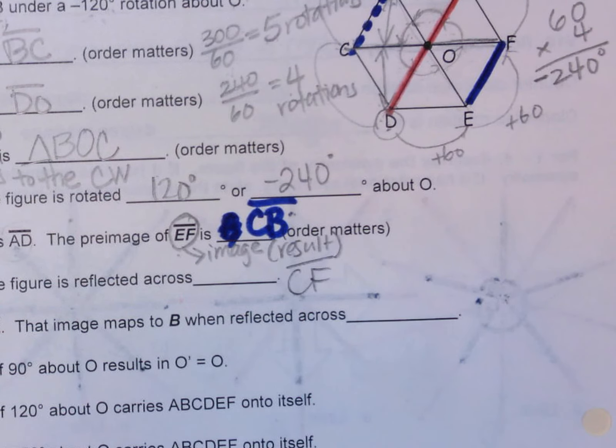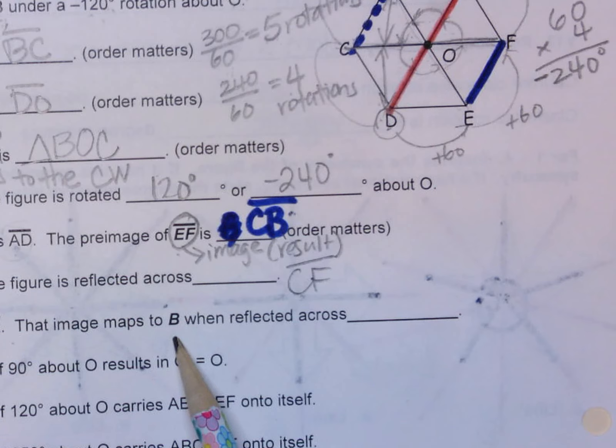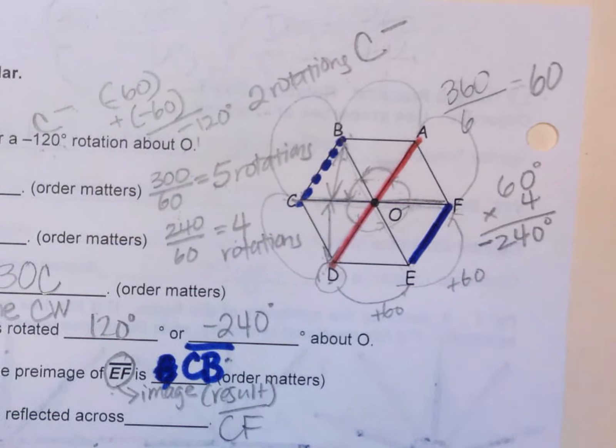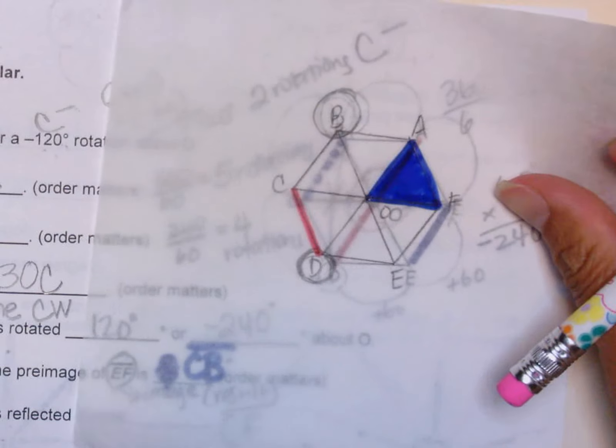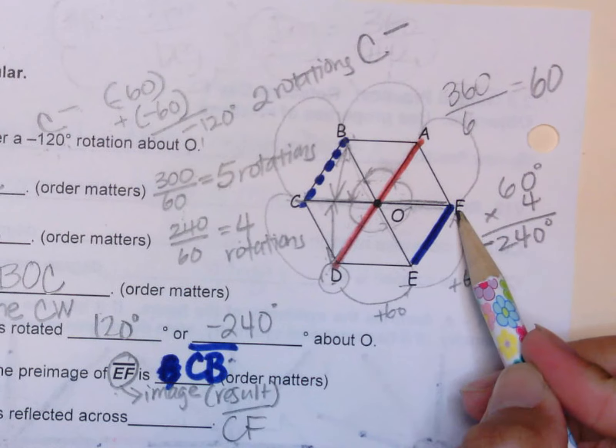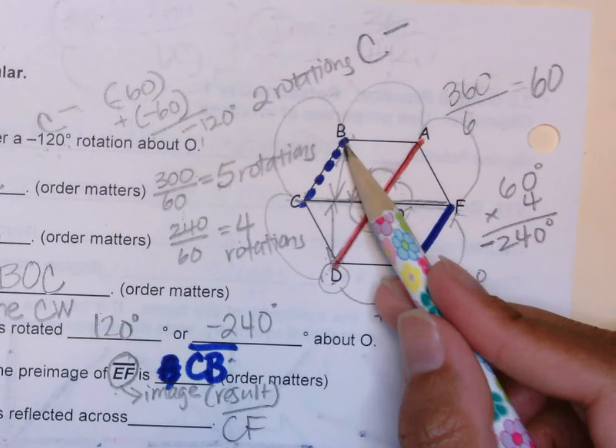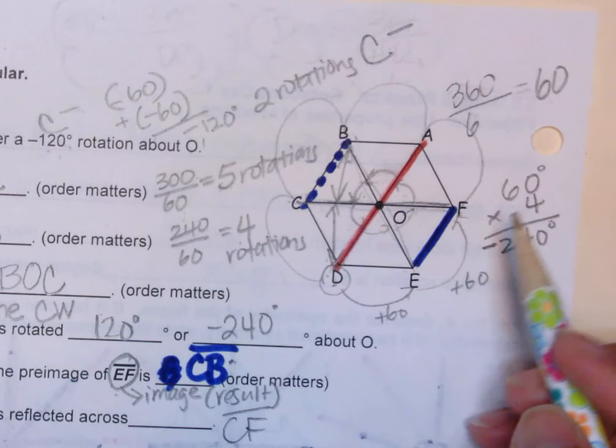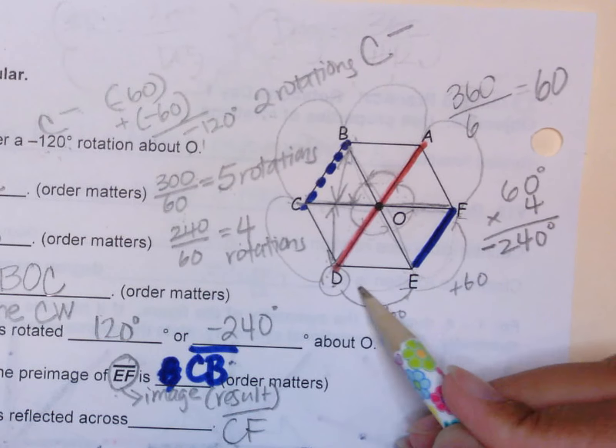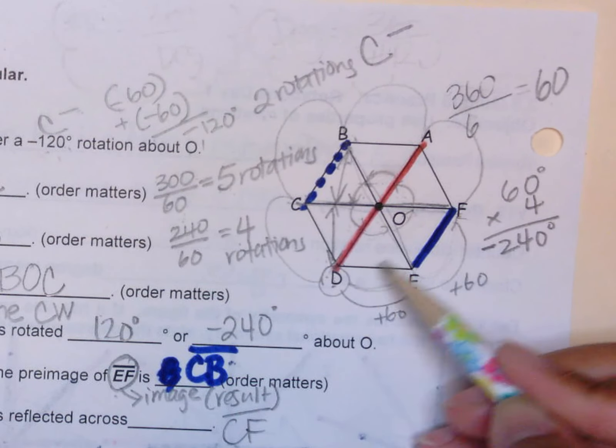Next, number 21. F is first reflected across BE. That image maps to B when reflected across what? Looking at our paper right here, F is this one. It's first reflected across BE. Here's BE, here's F. E is one unit away to F, so that means D is our image.